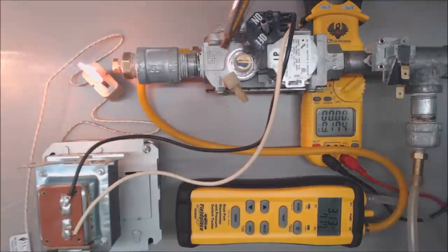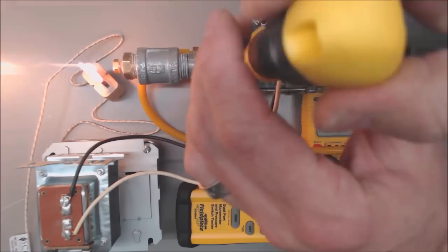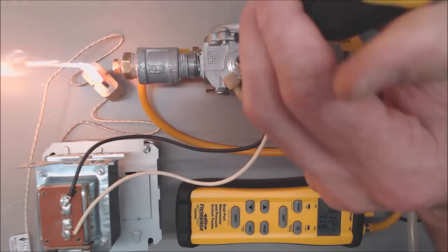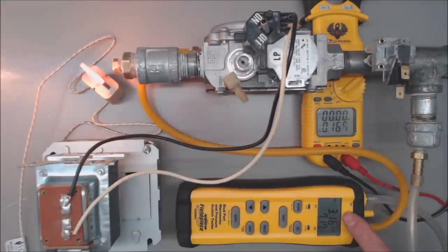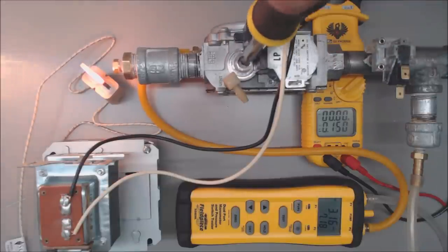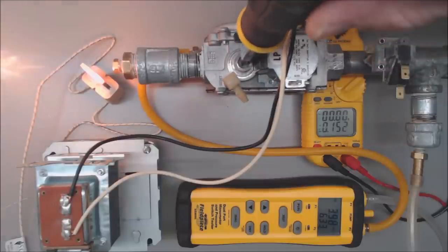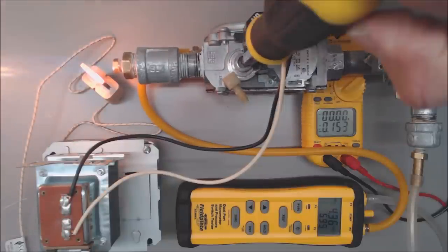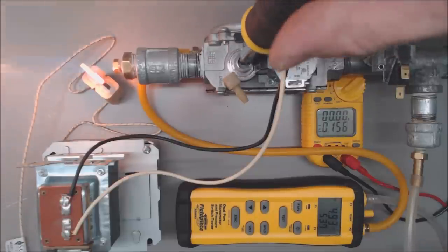So let's go ahead and adjust this. Okay so you see that we're reading 3.17 presently, and if we were to turn this clockwise we're going to go up to a higher gas pressure. So right there we have 3.98.